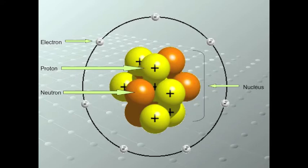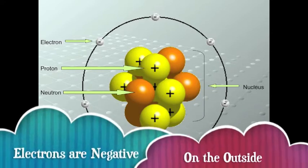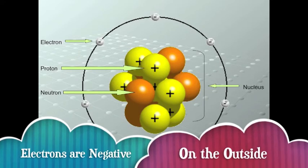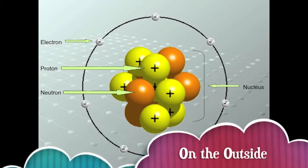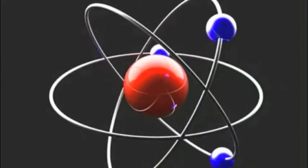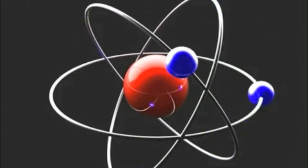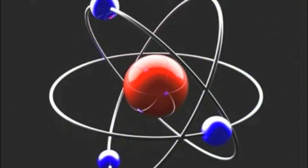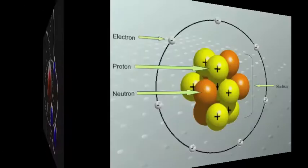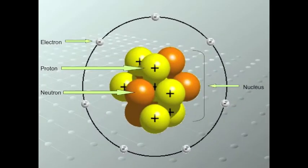But the real rock stars of the atom are the electrons. They're negatively charged and they're only found on the outside. In this movie, you can see that the electrons are never found in just one spot — they're constantly moving around the nucleus. If you haven't already filled in the answers for essential question number one, now's your last shot before we move on to essential question number two.